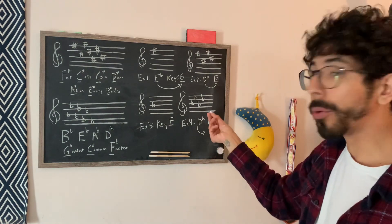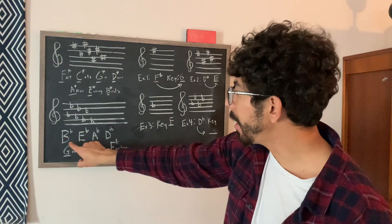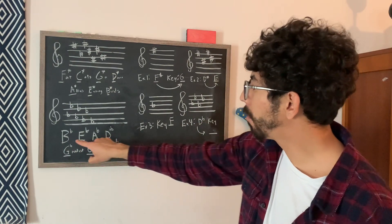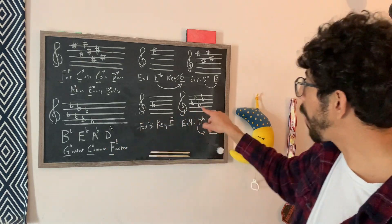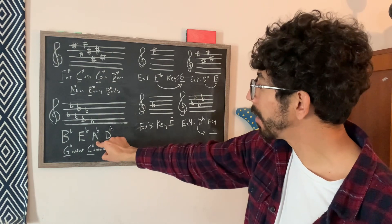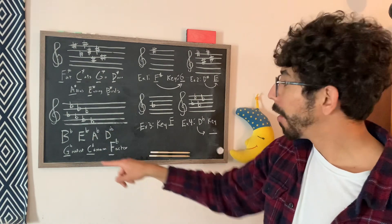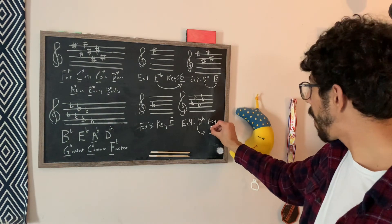But for other ones, say this one, there's four flats. So we're going to count B, E, A, D, one, two, three, four flats, right? D flat is the last flat in the signature. We're going to go to the second to last flat. And now that is telling us what key we're in, which is A flat major.